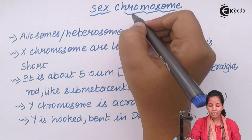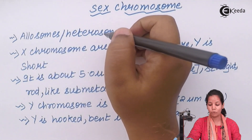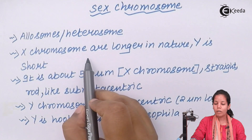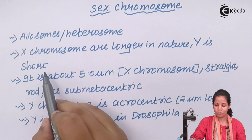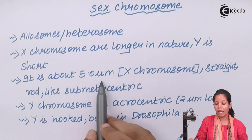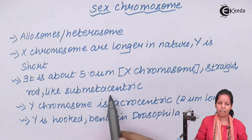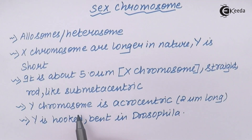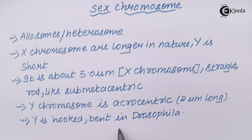Sex chromosomes are also called allosomes or heterosomes. The X chromosome is always longer in nature whereas the Y chromosome is shorter — about 2 micrometers long. The X chromosome is straight, rod-like, and sub-metacentric, whereas the Y chromosome is acrocentric in nature. The Y chromosome is always hooked and bent in Drosophila.